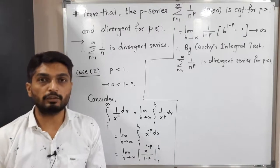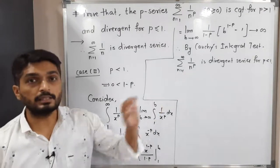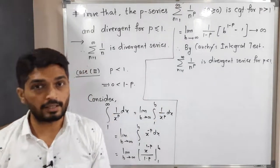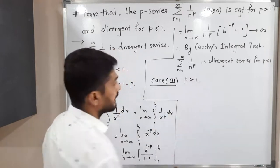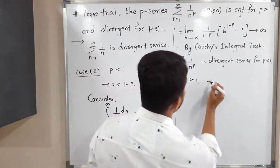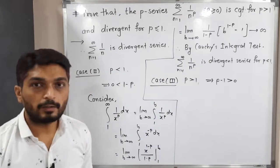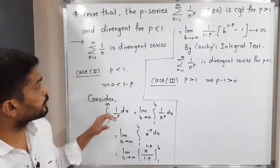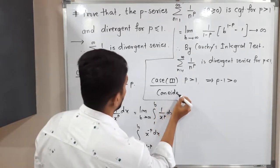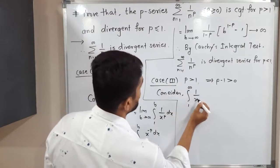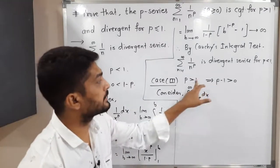So for p less than 1, we conclude that summation 1 upon n^p is a divergent series. Now let us go for the last case: Case 3, p is greater than 1. Since p is greater than 1, p minus 1 is greater than 0, so p minus 1 is a positive real number. We again apply Cauchy's integral test, considering the integral from 1 to infinity of 1 upon x^p dx.